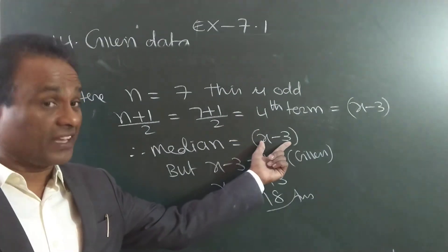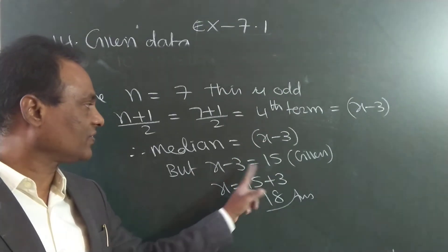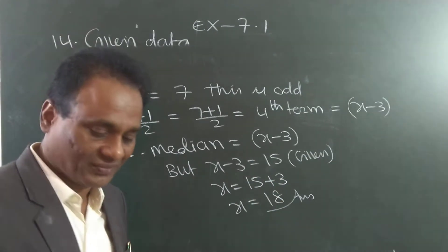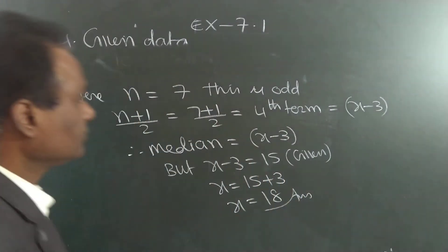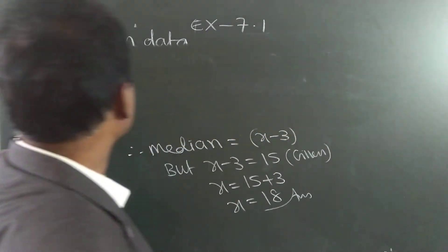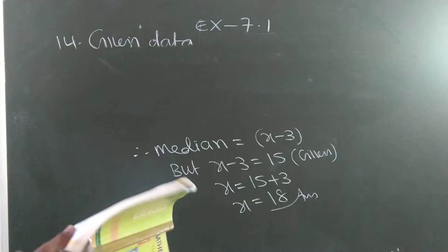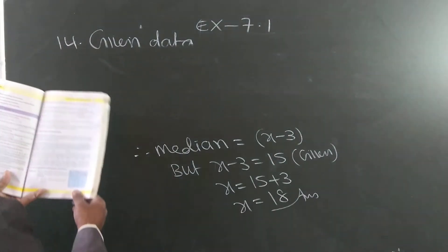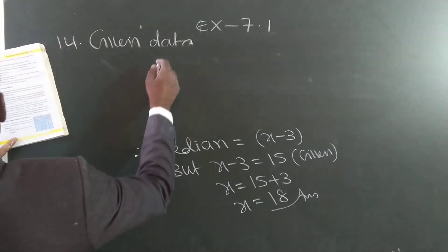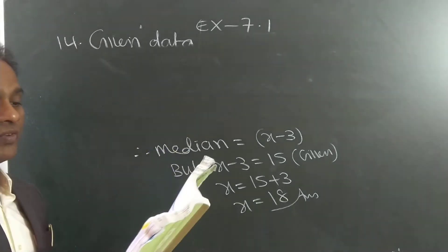The 4th term is the median x minus 3. But the median is given as 15, so x minus 3 = 15, meaning x = 18. With that, median problems are over.